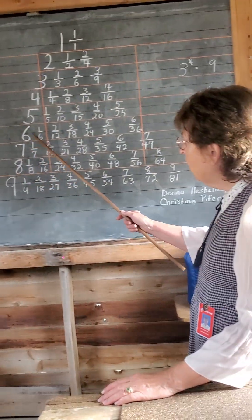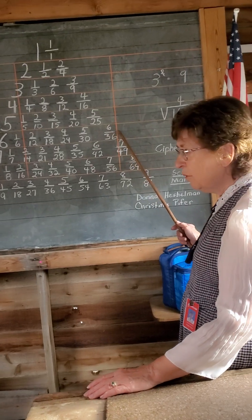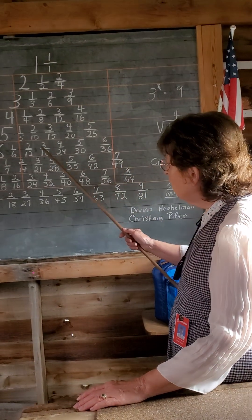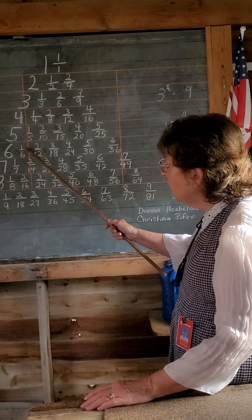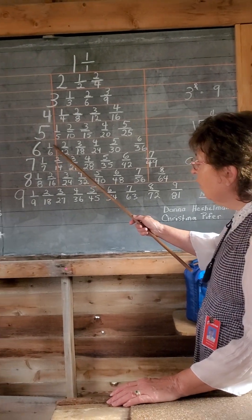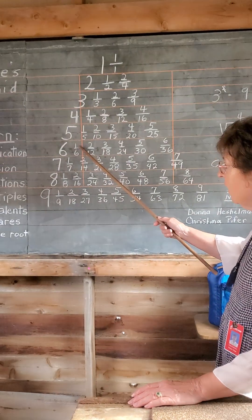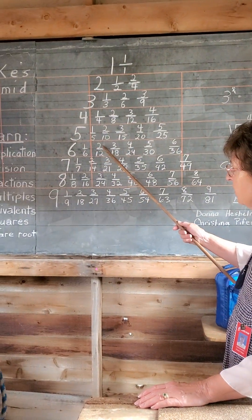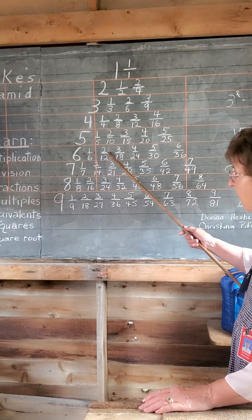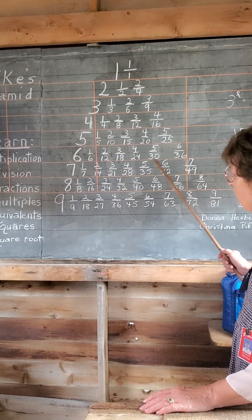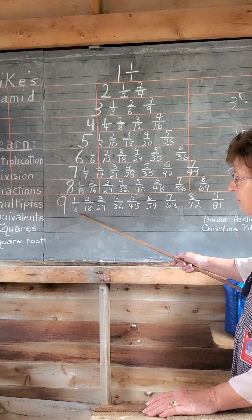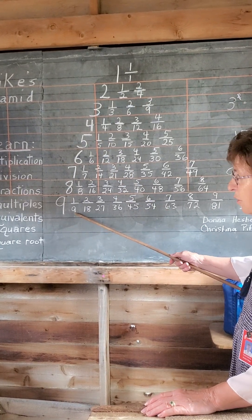Fractions — all the fractions in each row are equivalent to one another, which means they are equal. So if you had a pizza and you divided it into six pieces and you got one, that's the same as dividing it into 12 pieces and you get two of them. Those are all equivalent, equal fractions. And the first fraction is the lowest terms.